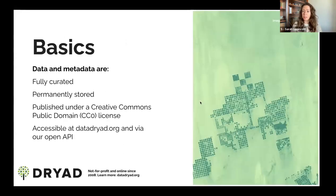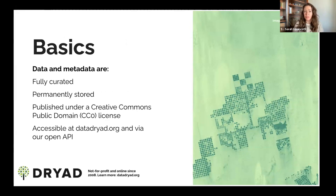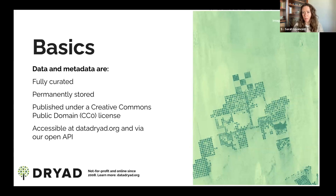We also publish data independent of an article publication — including null results or datasets not associated with a specific research article. Everything in Dryad is fully curated: our team of curators looks at every dataset before we publish it. We permanently archive everything we publish under a Creative Commons public domain CC0 license waiver, to remove as many restrictions as possible on data reuse. Everything is accessible at datadryad.org for humans, as well as through our open API for machine access.